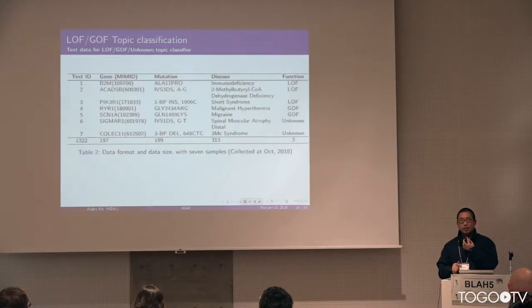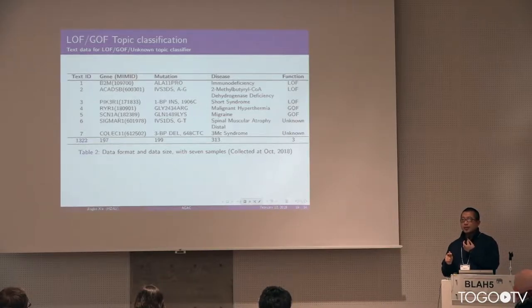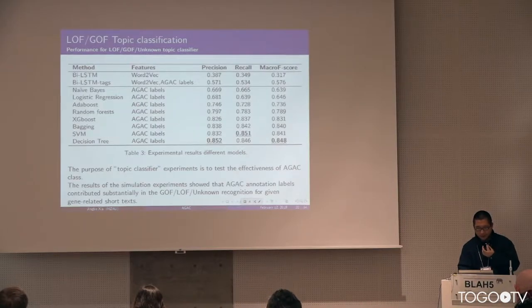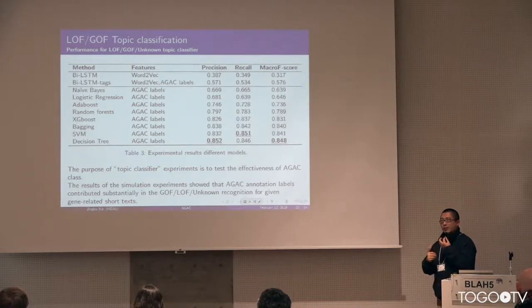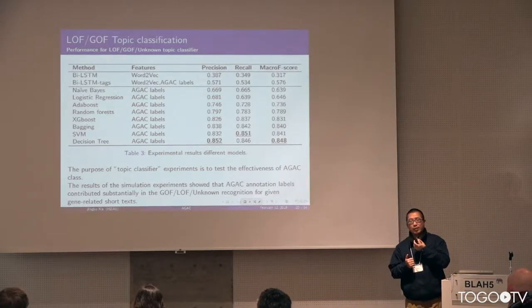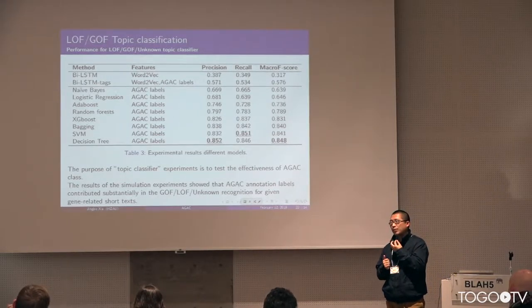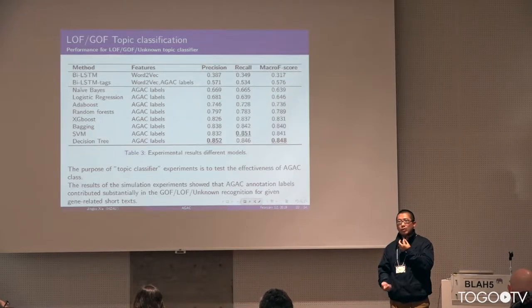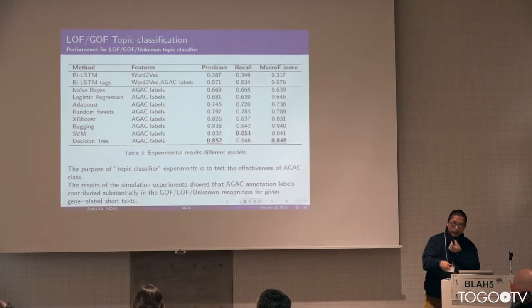The thing is how to use this to do the function change recognition. This table shows the training data. After labeling this training data by using our corpus, we have the results listed in this table, which are many baseline measures. Some are from currently very popular STM, word embedding, like this.